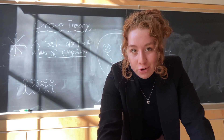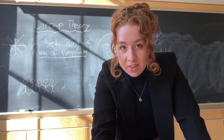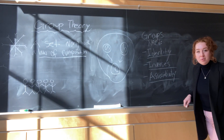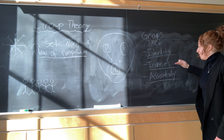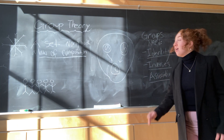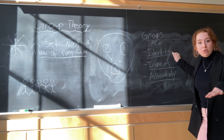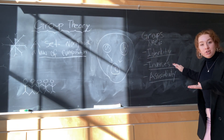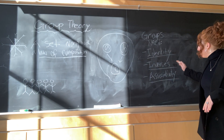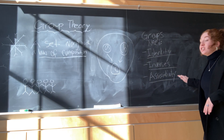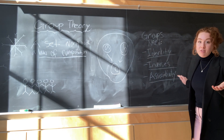A group has to follow three fundamental rules. There are three things that a group needs: an identity element, inverses, and associativity. An identity element is an element that makes it so other elements don't change. Inverses are elements that when combined give you the identity element. And associativity basically just means that it doesn't matter where you put parentheses in a mathematical operation.